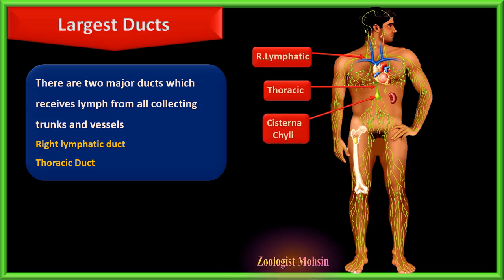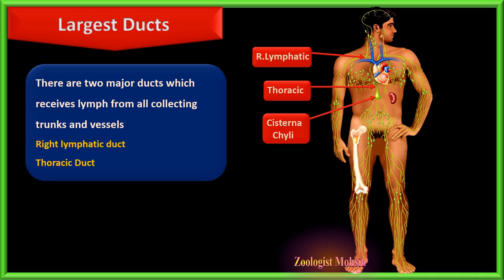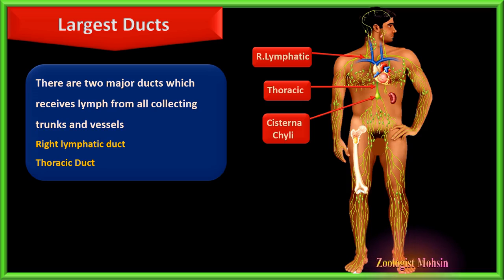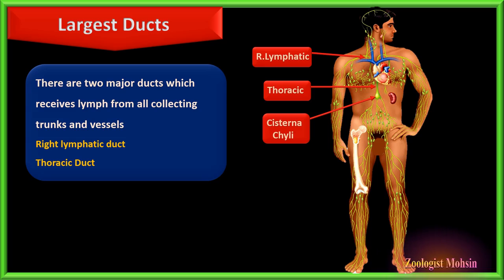One important thing to note is that the lumbar trunk and intestinal trunk join to form a sac called the cisterna chyli. Chyle is the intestinal fat-rich lymph produced after eating food. In simple terms, the thoracic duct receives lymph from all parts below the diaphragm and from the left arm, left head, neck, and thorax.